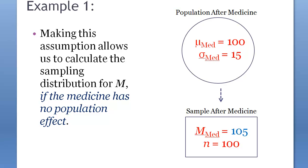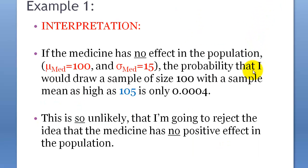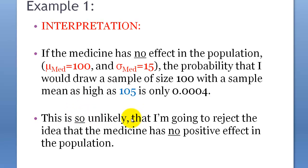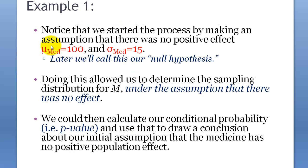Based on the sample statistics, the interpretation is: if the medicine has no effect in the population (mu_med = 100, sigma_med = 15), the probability of drawing a sample of size 100 with a sample mean as high as 105 is only 0.0004. This is so unlikely that I'm going to reject the idea that the medicine has no positive effect in the population. This assumption of no effect is actually called the null hypothesis.